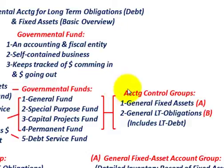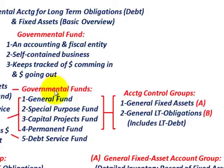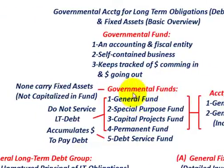Along with those governmental funds, we have what they call accounting control groups. This is where we keep track of our general fixed assets and our general long-term obligations, which would include long-term debt. So we've got the account control groups and then we have those governmental funds. First, let's look at what we're talking about with a governmental fund.